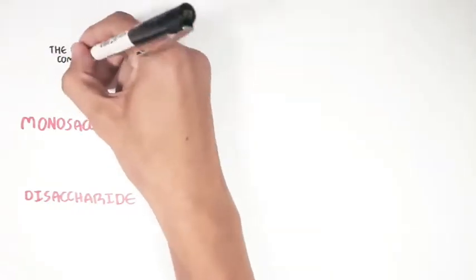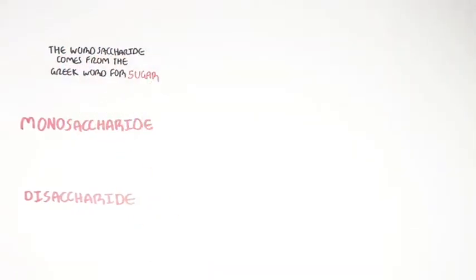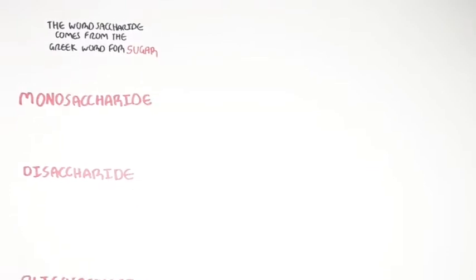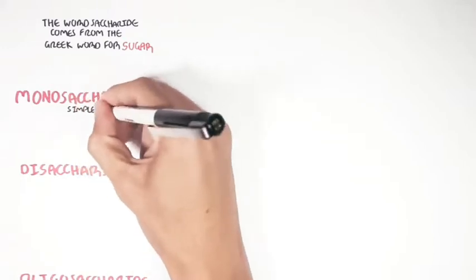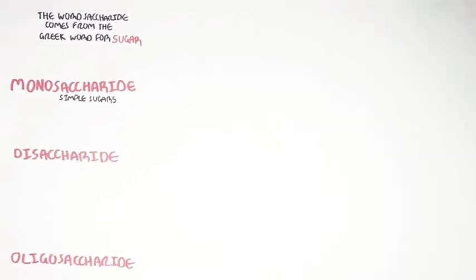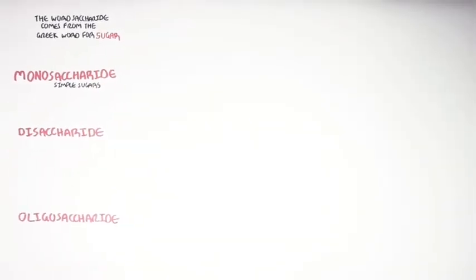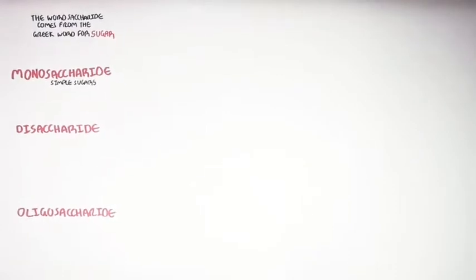The word saccharide is derived from the Greek word for sugar. Now let us look at each of these types of carbohydrates and learn a bit more about their structure and how they are formed. Let's begin with monosaccharides. Monosaccharides are also referred to as simple sugars, and they are the smallest units that make up any carbohydrate — they are the building blocks.